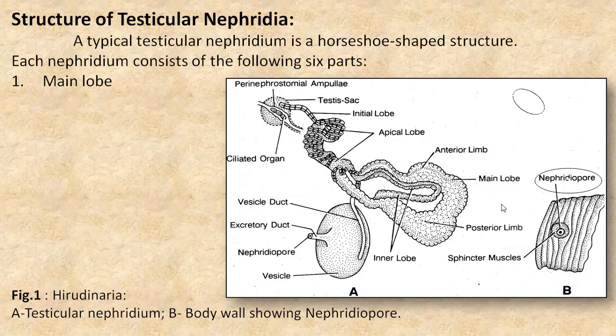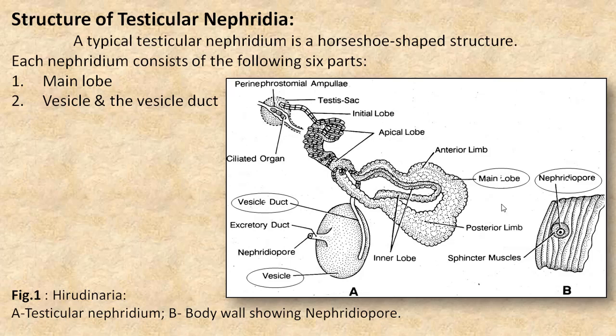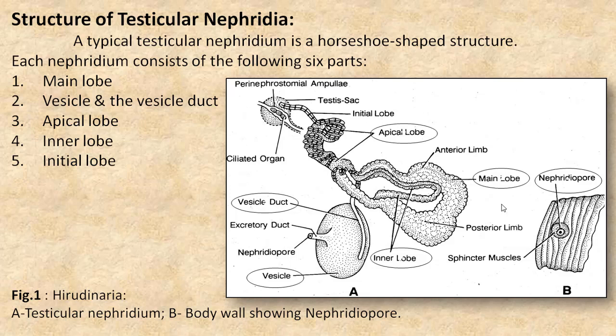Each Nephridia consists of the following 6 parts: 1. Main lobe, 2. Vesicle and vesicle duct — this is the vesicle and vesicle duct. 3. Apical loop, 4. Inner loop, 5. Initial lobe — this is the initial lobe, and 6. Ciliated organ — here you can see the ciliated organ.